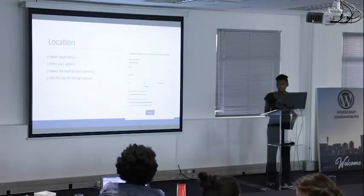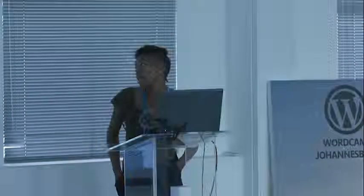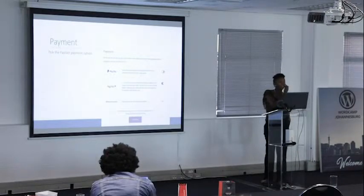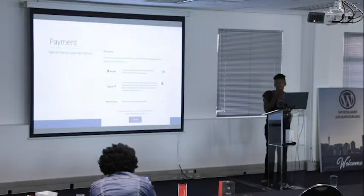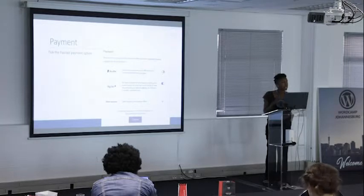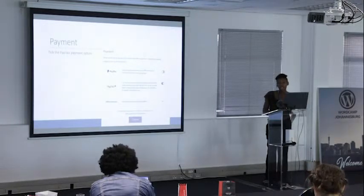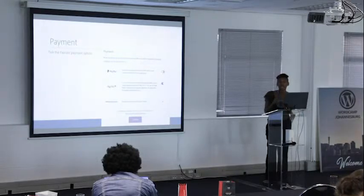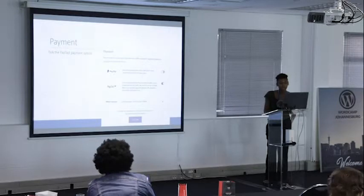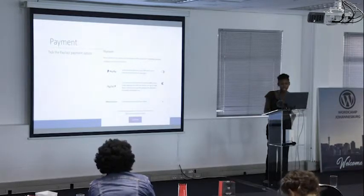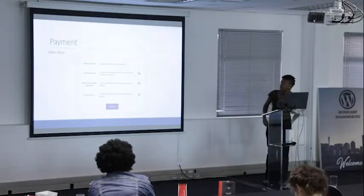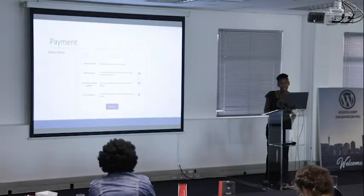The next screen is where we select our payment options. Since we're going to be implementing PayFast, we select and tick the box for PayFast as our payment method. Personally I haven't selected any offline payment, but if you want to use offline payments such as bank transfers you can select those. For now I'm just selecting PayFast and pressing Continue.